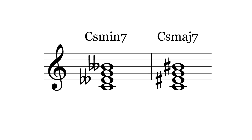The subminor and supermajor triads have 7th chord counterparts. Just as you would expect, there's a perfect fifth between the 3rds and 7ths.